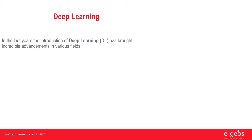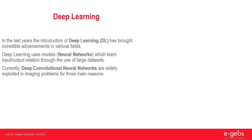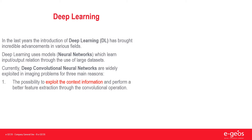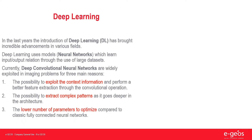Let's introduce deep learning. In the last years, the introduction of deep learning has brought incredible advancements in a variety of fields. Deep learning uses models, namely neural networks, which learn input-output relations through the use of large datasets. Currently, deep convolutional neural networks are widely exploited for imaging problems for three main reasons: the possibility to exploit context information and perform better feature extraction through the convolutional operation; the possibility to extract complex patterns as the architecture goes deeper, through combination and composition of simple features; and the lower number of parameters to optimize compared to classic fully connected neural networks.